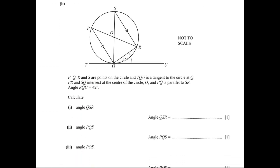The next question is a circle question. Measure angle QSR is equal to 42 because the measure of the inscribed angle is equal to the measure of the angle of tangency subtended by the same arc. So measure angle QSR equals 42. Measure angle PQS is also equal to 42 because they are alternate angles.